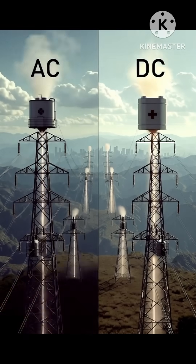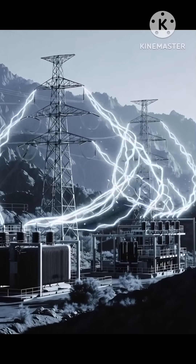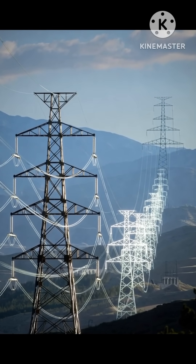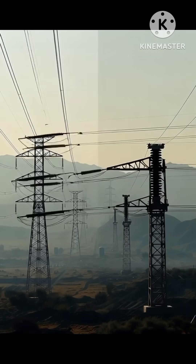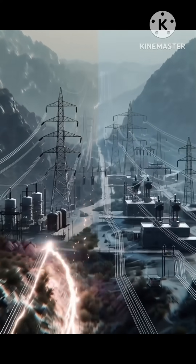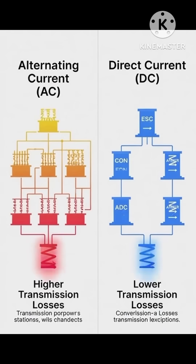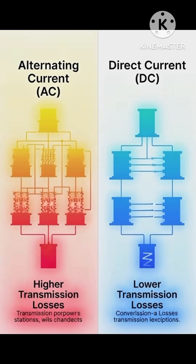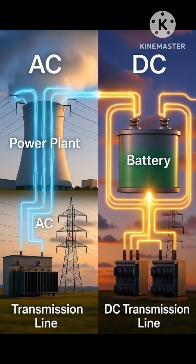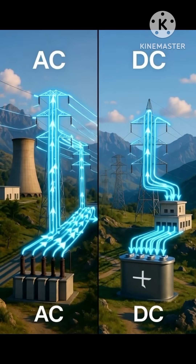But DC transmission is catching up fast, especially in high voltage direct current systems, or HVDC. They're more efficient for extremely long distances and undersea cables. AC systems are cheaper and simpler for shorter distances, but DC systems need expensive converter stations at both ends — they save power and improve stability in long-distance or intercontinental links.